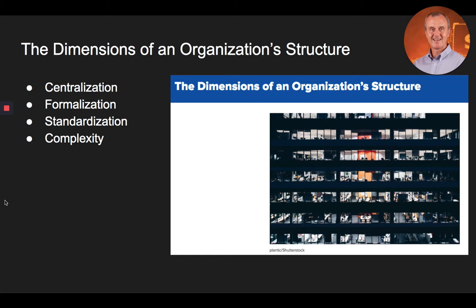The final dimension of organizational structure is complexity. Complexity is the number of different positions and departments, as well as the number of authority levels in an organization. Organizations that are larger tend to be more complex than smaller firms that do not have as much differentiation.